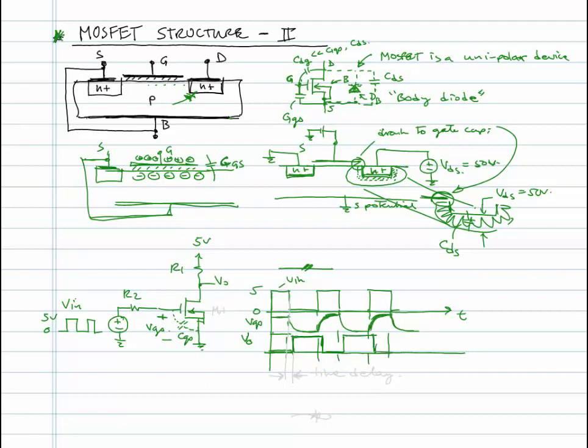So you end up getting something that would look like this. So if you notice, between here and here, there is a time delay between the square wave or pulse signal VIN and the output of my inverter, I actually have a delay.